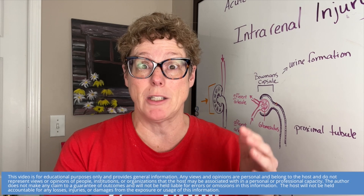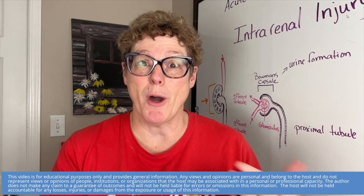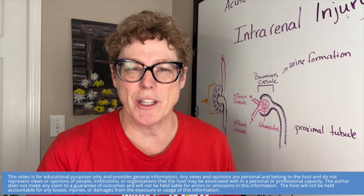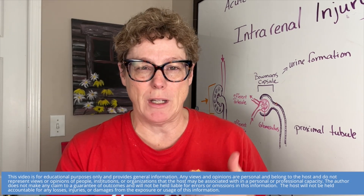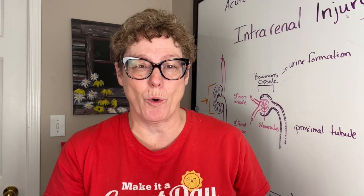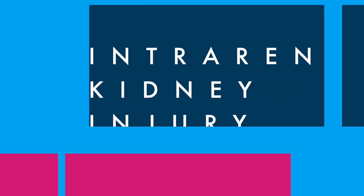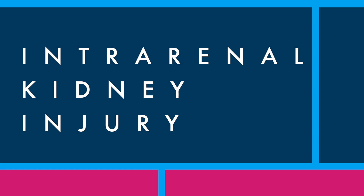Acute renal failure is a rapid deterioration of the kidney's ability to produce urine. In the hospital we recognize this because we monitor urine output, but there are other things we look for. In today's video we're going to talk about the intrarenal mechanisms that lead to acute kidney injury, why you need to know it, and what you can do.